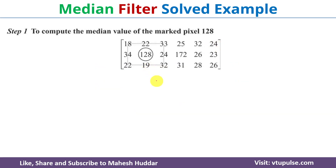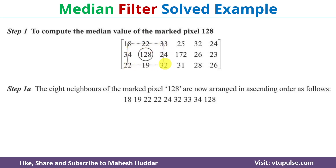To compute the median value of the marked pixel 128, we use this 3x3 neighborhood matrix. We will get 8 neighborhood values for the marked pixel 128, giving us 9 values total for the 3x3 mask. These 9 values we will arrange in ascending order.